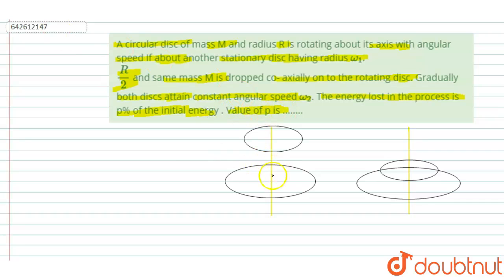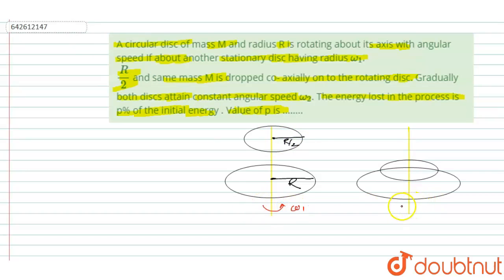This is the figure. This is disk A having radius capital R, and this is a smaller disk B having radius R by 2. Disk A is rotating with angular speed omega_1. When the smaller disk falls on the bigger disk, they combine and rotate together, attaining a constant speed omega_2.